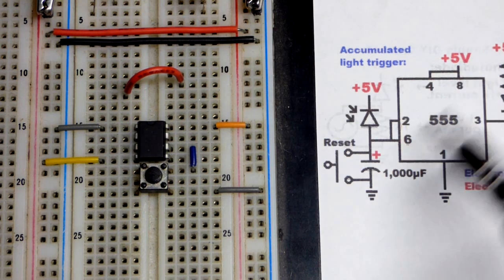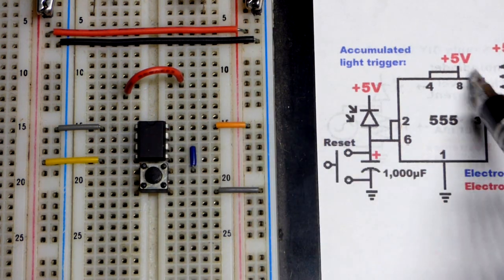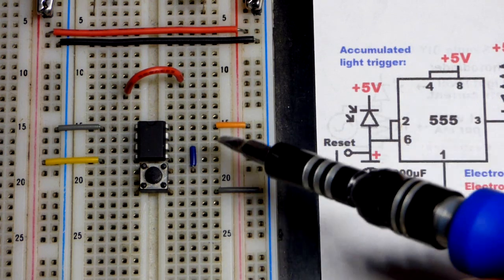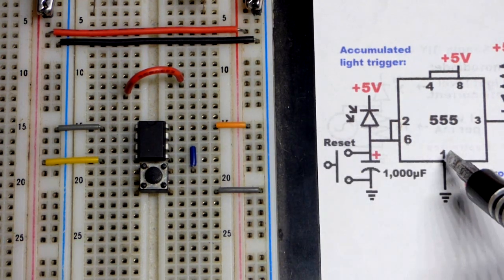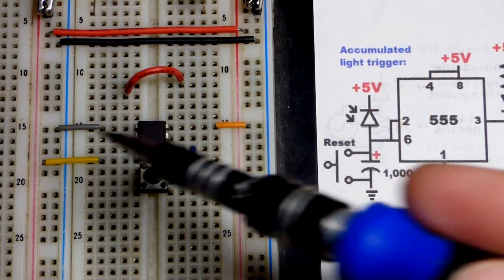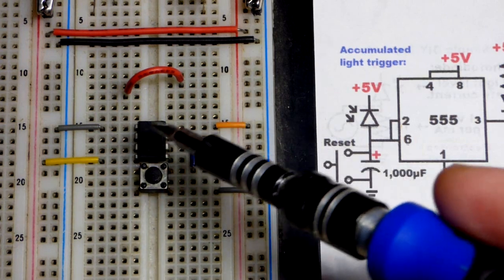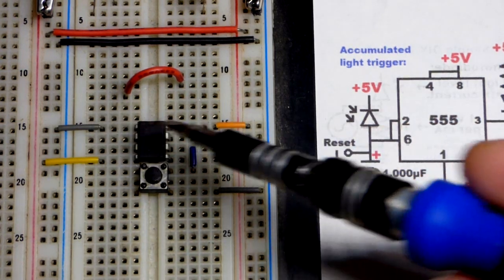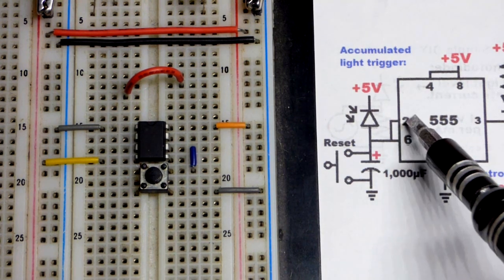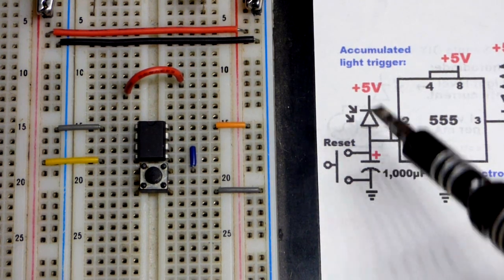First off, we have to power the 555 timer—that's what we're using, an NE 555 timer. Pin 8 to the positive supply right there, and pin number 1 to the negative supply. So that provides all the power and our 1/3 and 2/3 of the supply voltage. There's a voltage divider in there—that's what pin 2 and pin 6 are looking at.